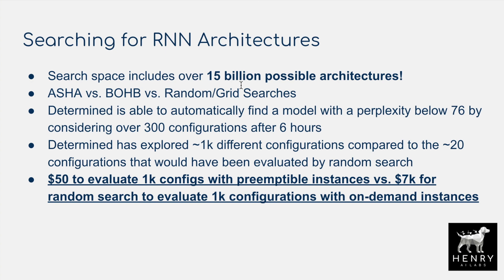First, searching for RNN architectures in a search space of over 15 billion possible architectures. Determined is able to get a better metric (lower perplexity is better for language modeling) after considering 300 configurations out of the 15 billion, after six hours. The key takeaway: Determined has explored about 1,000 configurations compared to the 20 configurations evaluated by a random search. Without early stopping and asynchronous early stopping, you'd only evaluate 20 compared to 1,000. It's $50 to evaluate 1,000 with spot instances compared to $7,000 — completely game-changing.